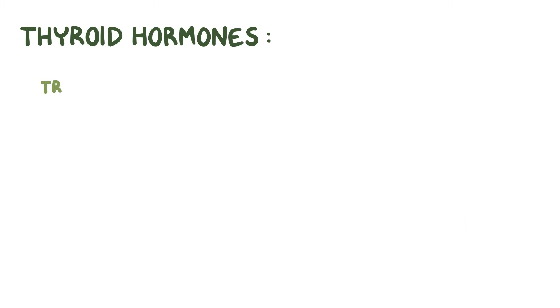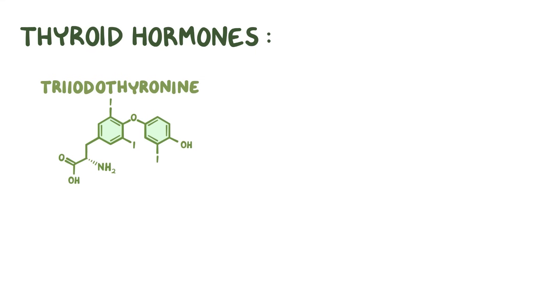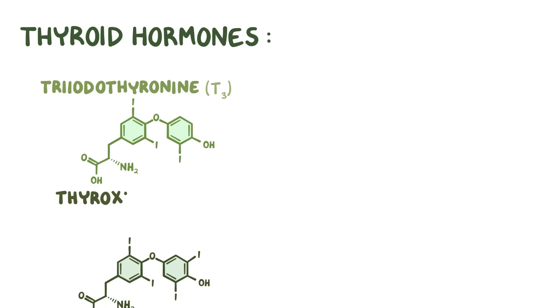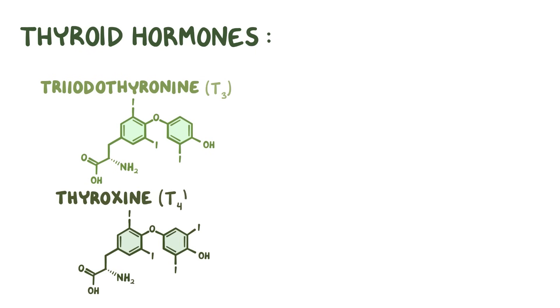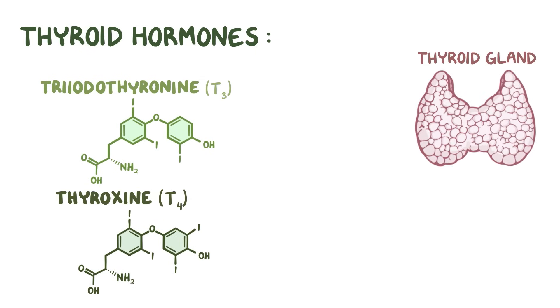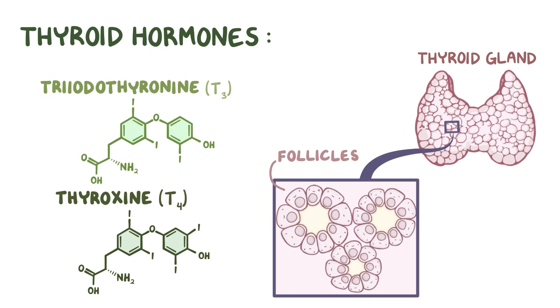There are two different thyroid hormones: triiodothyronine, or T3, and thyroxine, or T4. If we zoom into the thyroid gland, we'll find thousands of follicles, which are small, hollow spheres whose walls are lined with follicular cells, or thyrocytes.